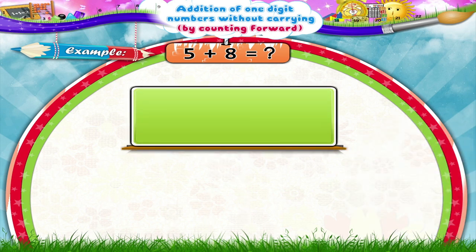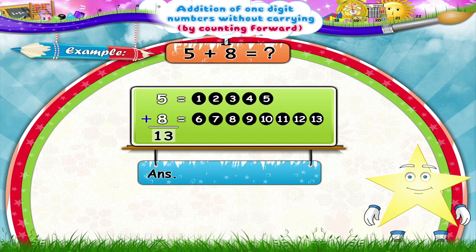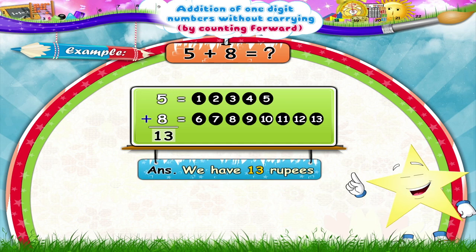Let us draw 5 dots for 5 rupees and 8 dots for 8 rupees. Now what should we do? Yes, let's count the dots all together. The answer is 13. Stari! We have got 13 rupees in all.